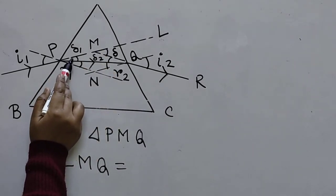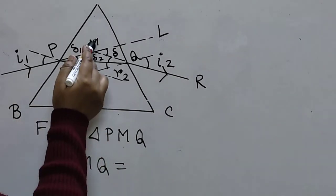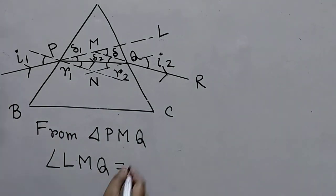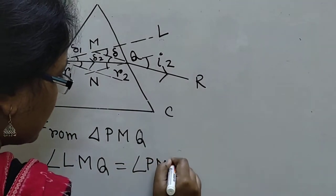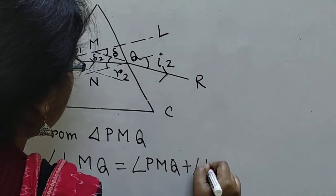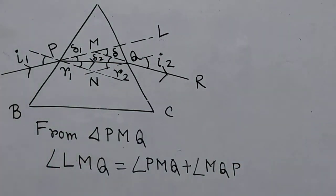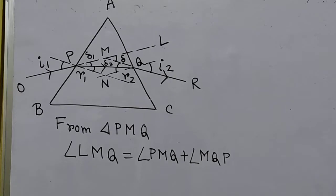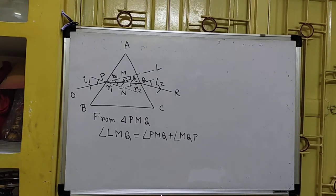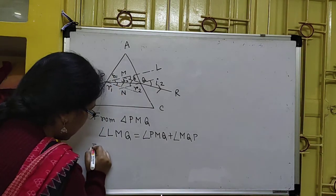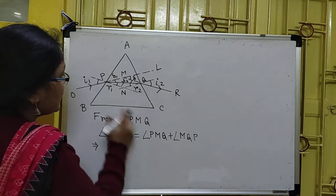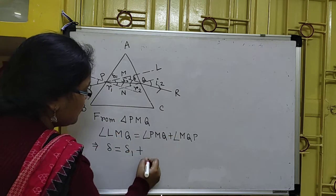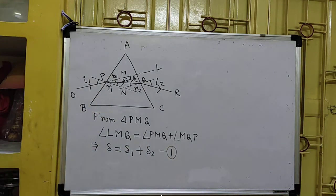Delta 1 and delta 2 are the interior angles — or rather I can say angle PMQ and angle MQP are the interior angles. So we write that angle LMQ equals angle PMQ plus angle MQP. Angle LMQ has been denoted as delta. So delta equals delta 1 plus delta 2. Give it equation number 1. This is my first thing done.